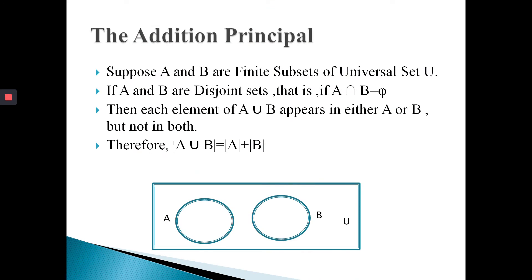Suppose A and B are the finite subsets of universal set U. As shown in the figure, the rectangle represents the universal set U, and inside it, both circles A and B are subsets of universal set U.